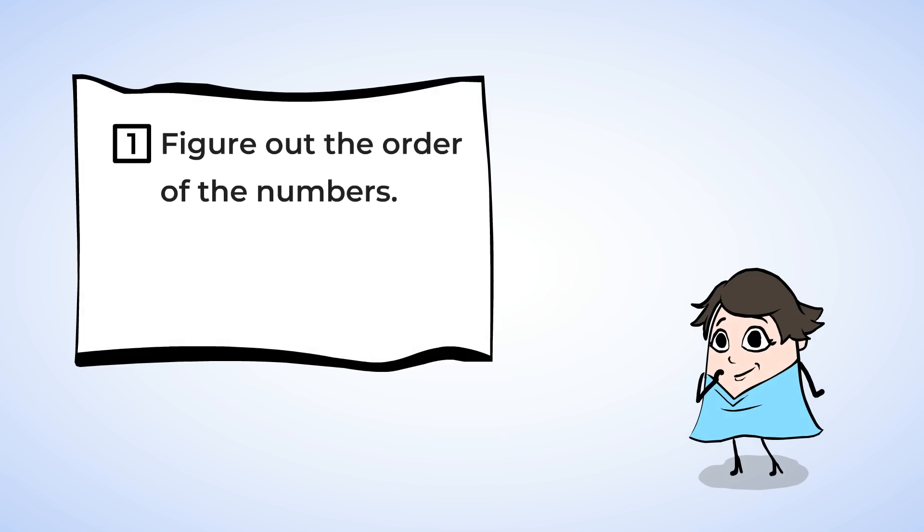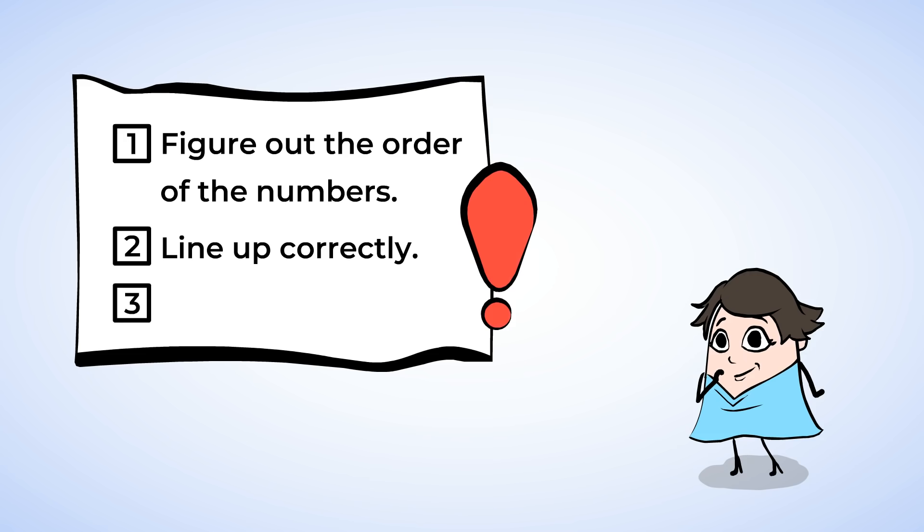But first, let's review. Pay attention to the story to figure out the order of the numbers. Then line up the place value correctly. If we can subtract 30 minus 10, we can also subtract larger numbers too. Remember to focus on one place at a time.